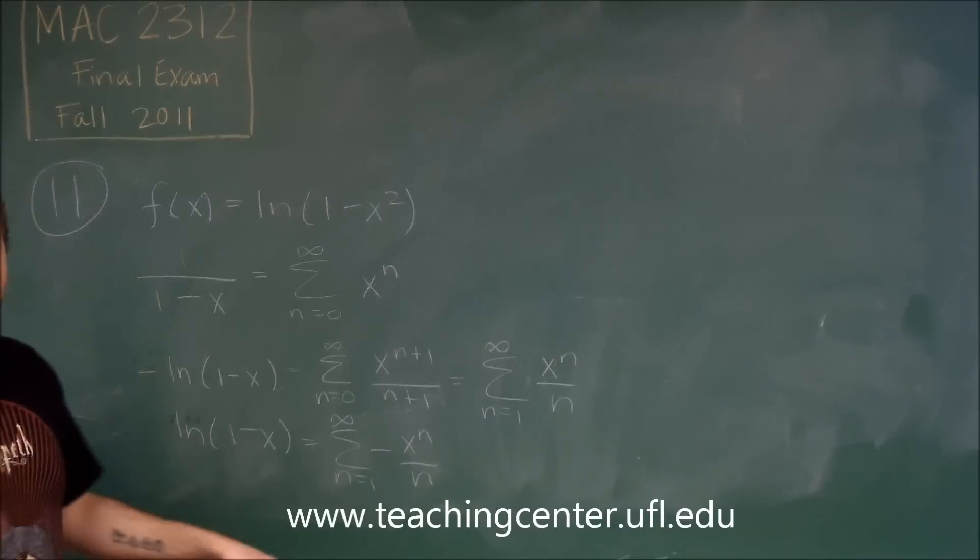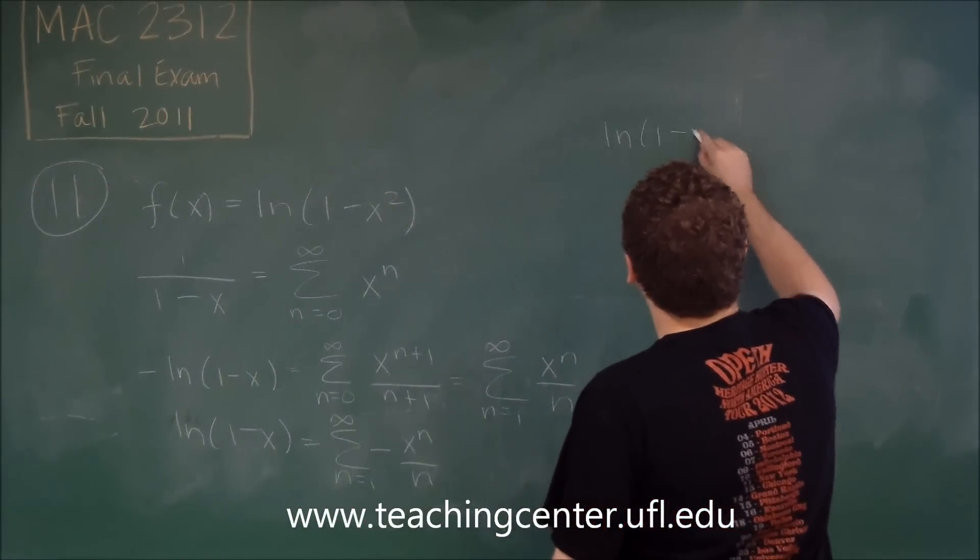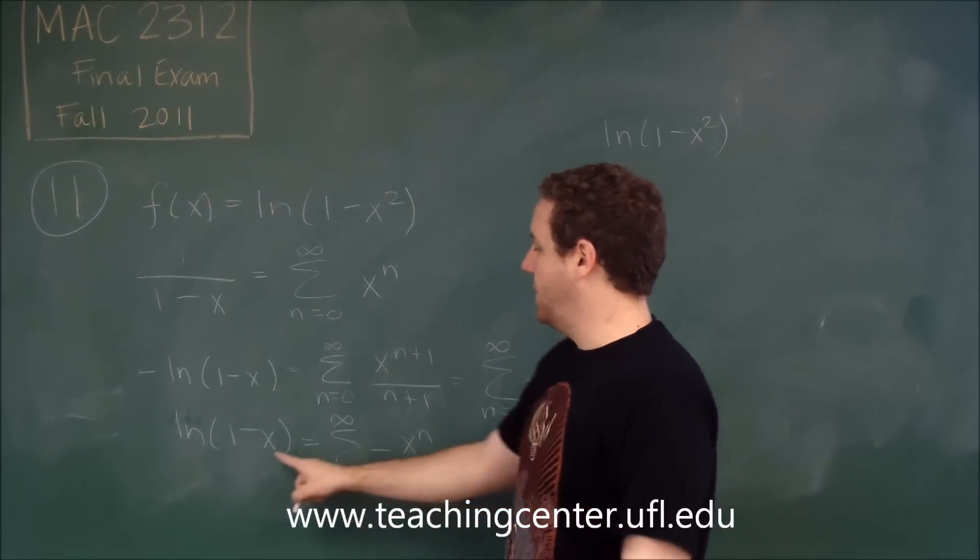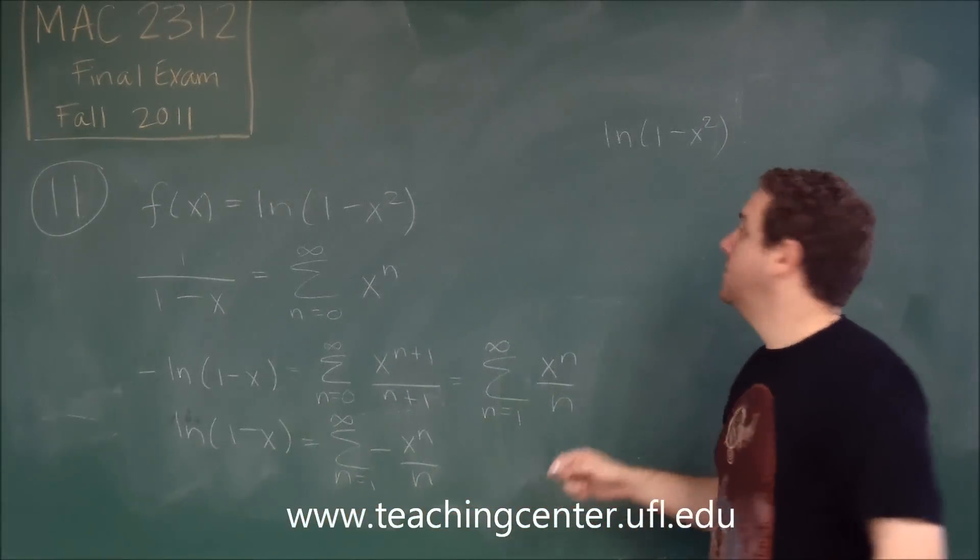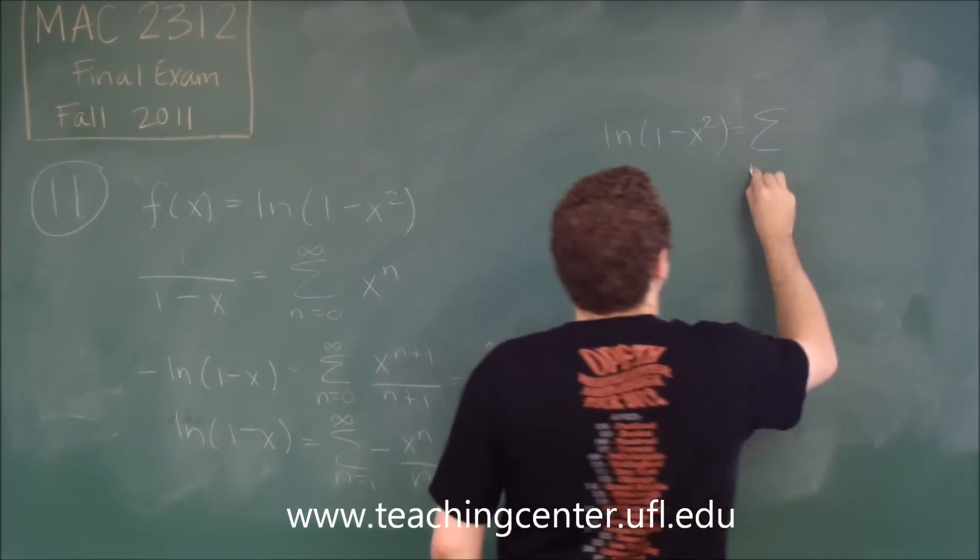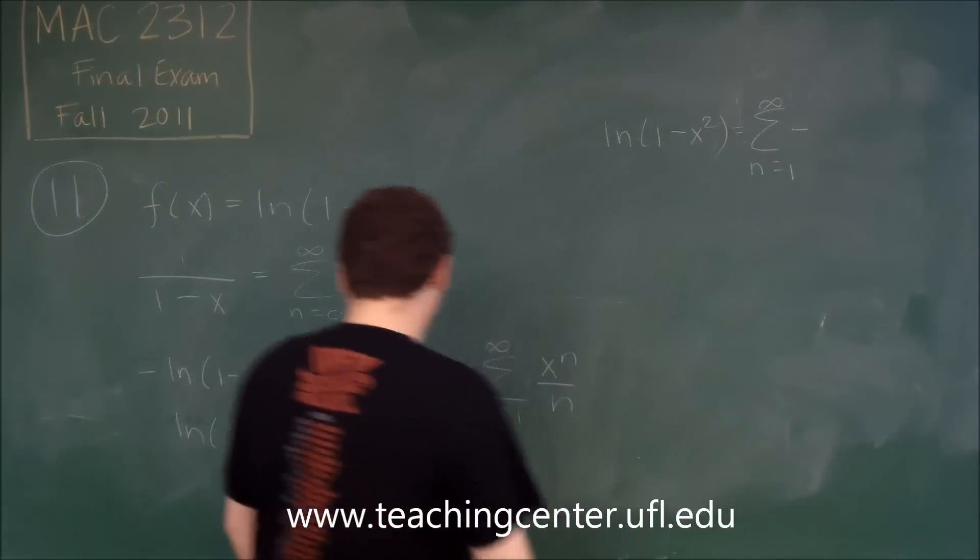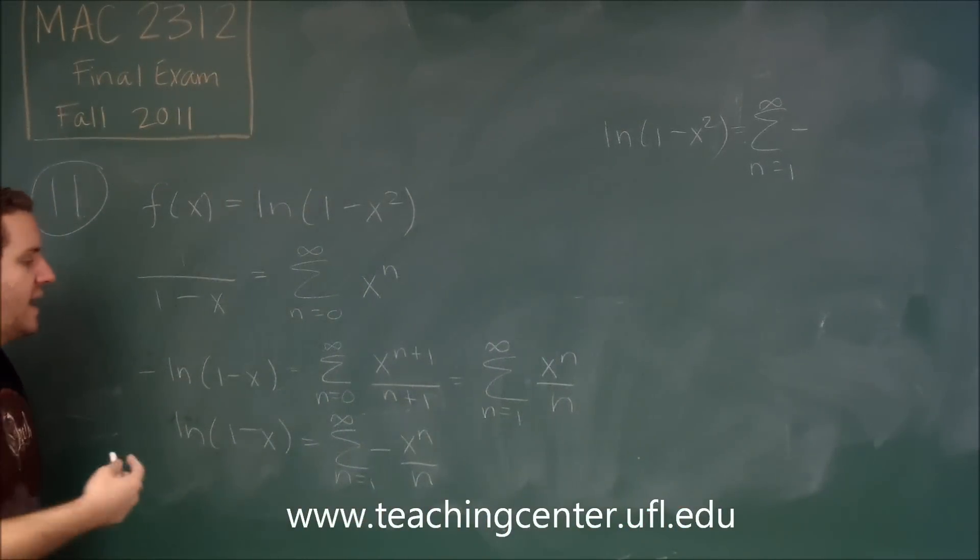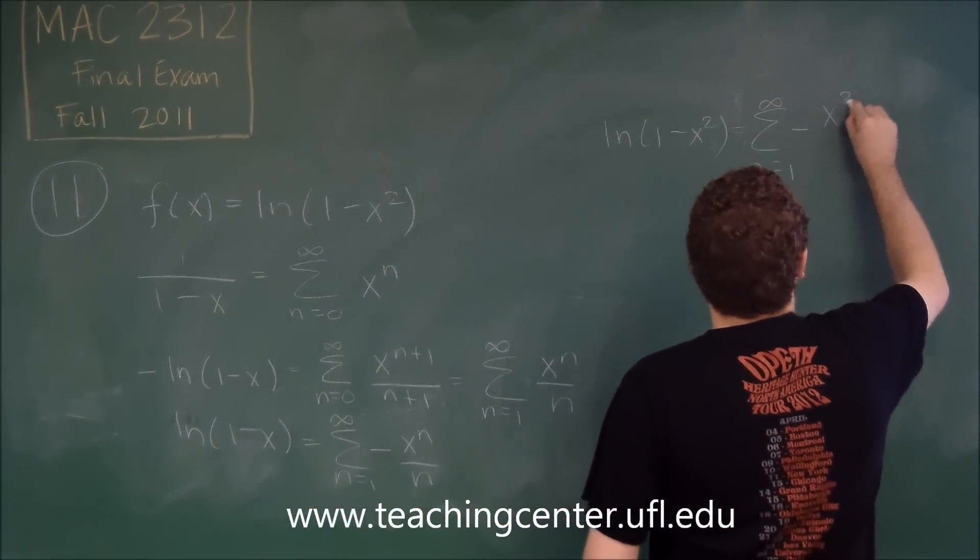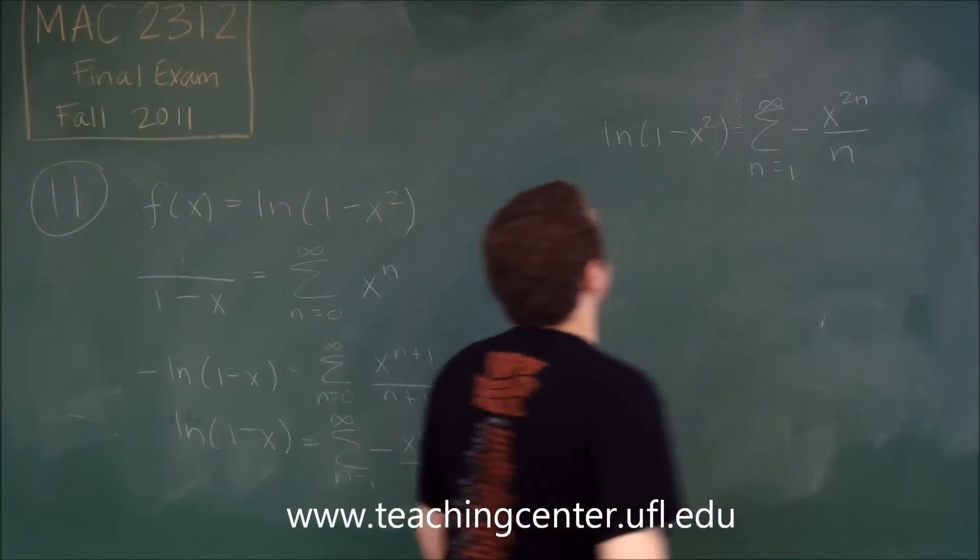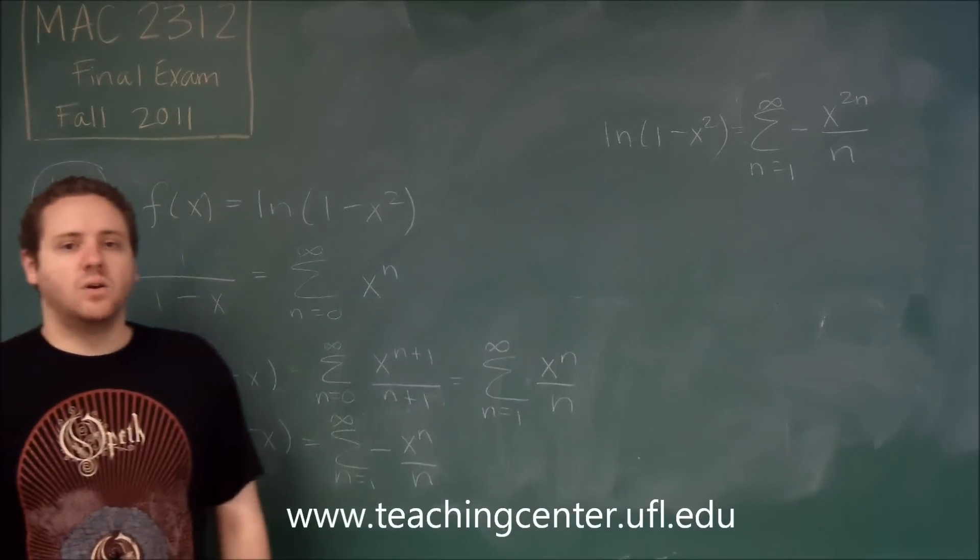The final thing we need to do is we need to transform that x into an x². So remember for power series, if you replace x with an x², you can do that in the series also. So we would have sum 1 to infinity negative, so instead of x, now we're going to be writing x². And x² to the n is just x^(2n). So we get -x^(2n)/n.